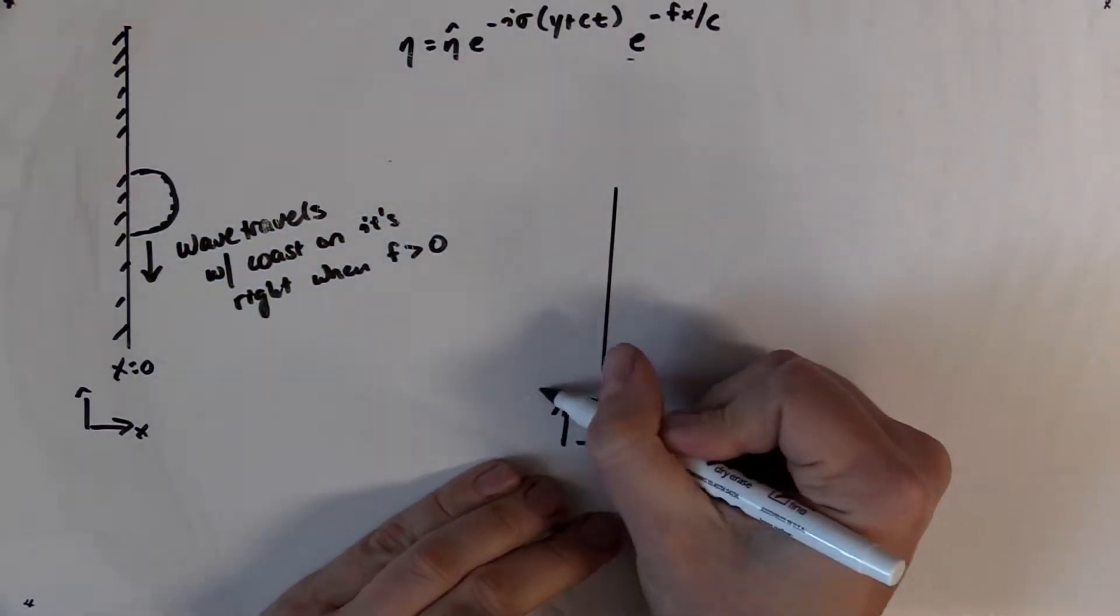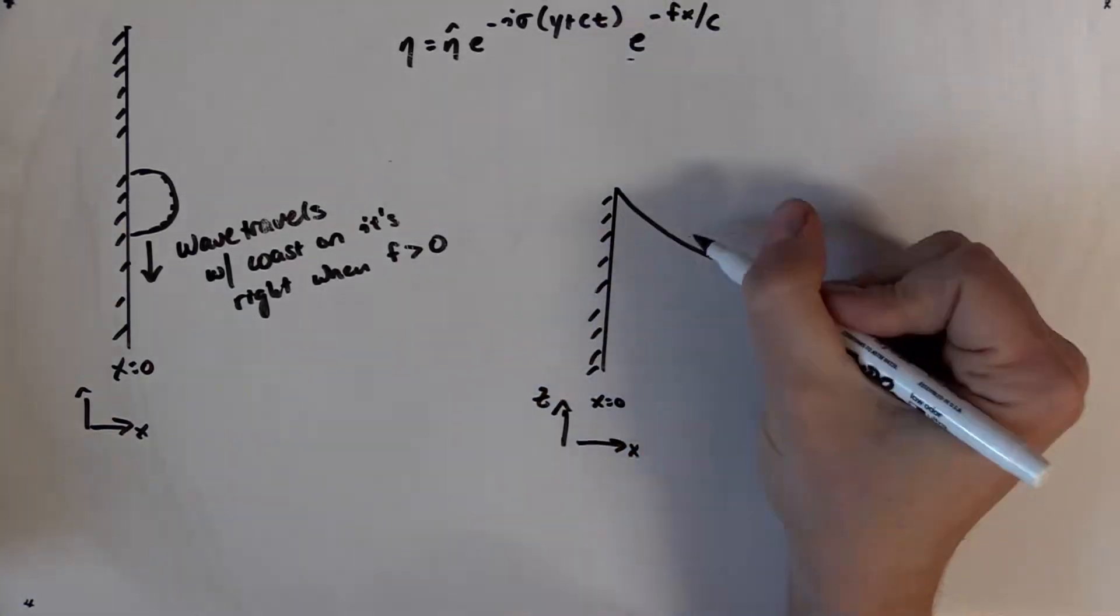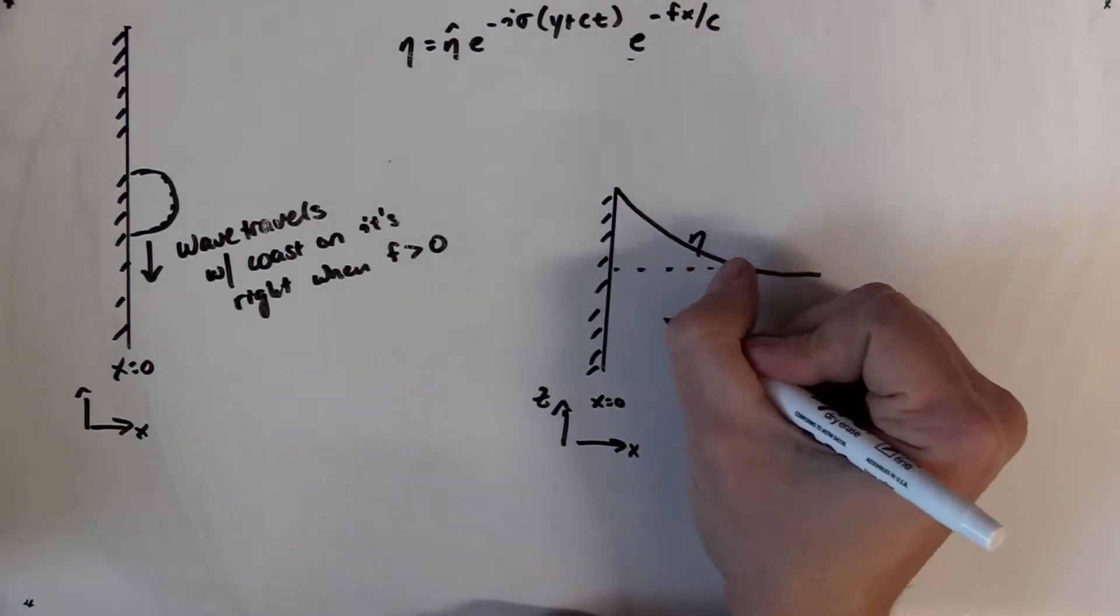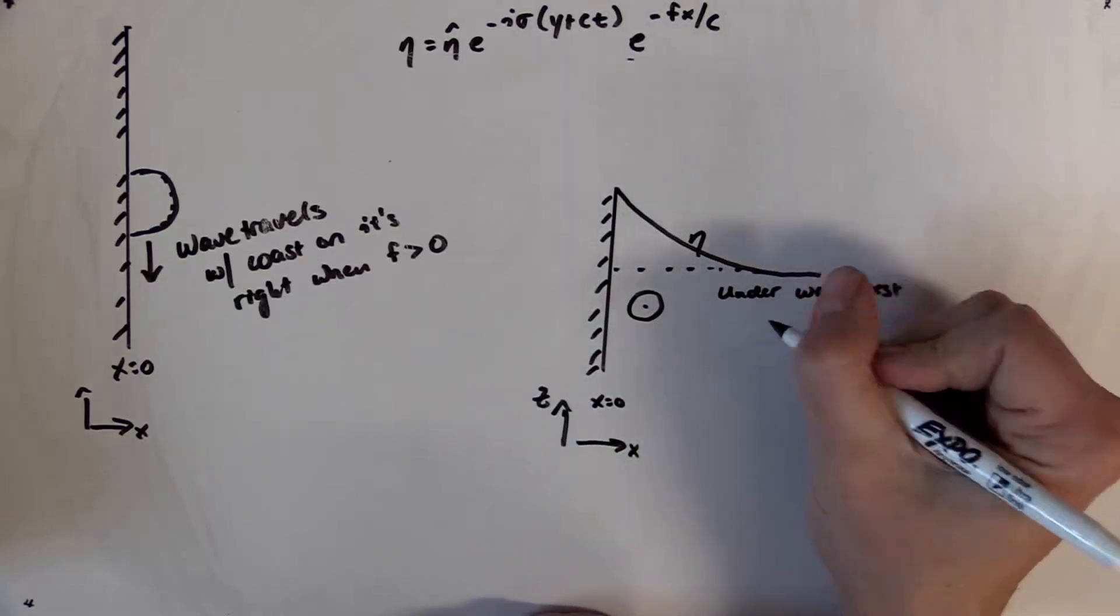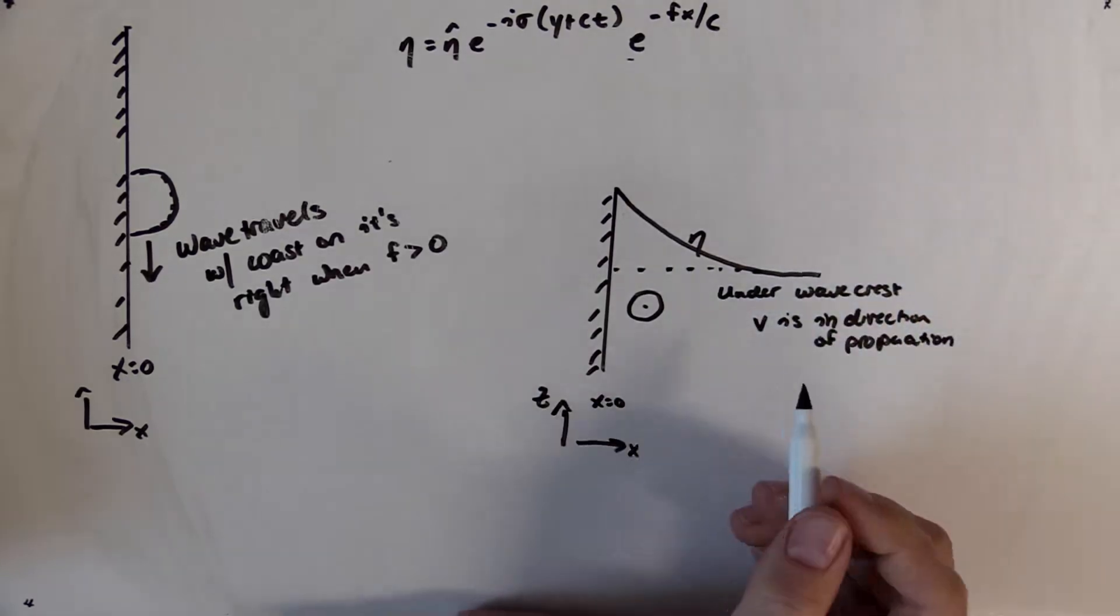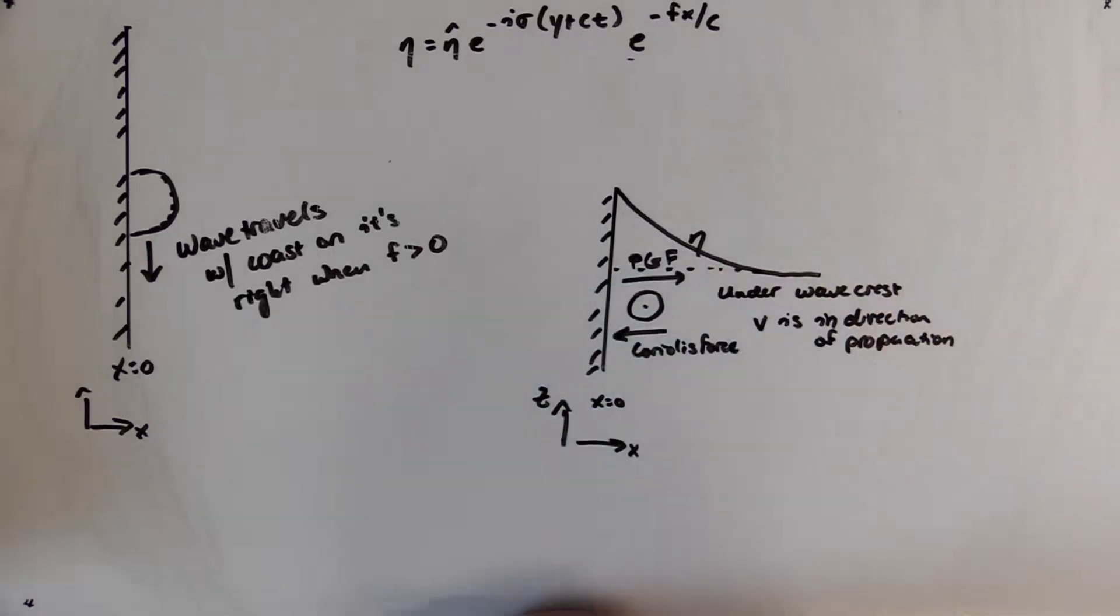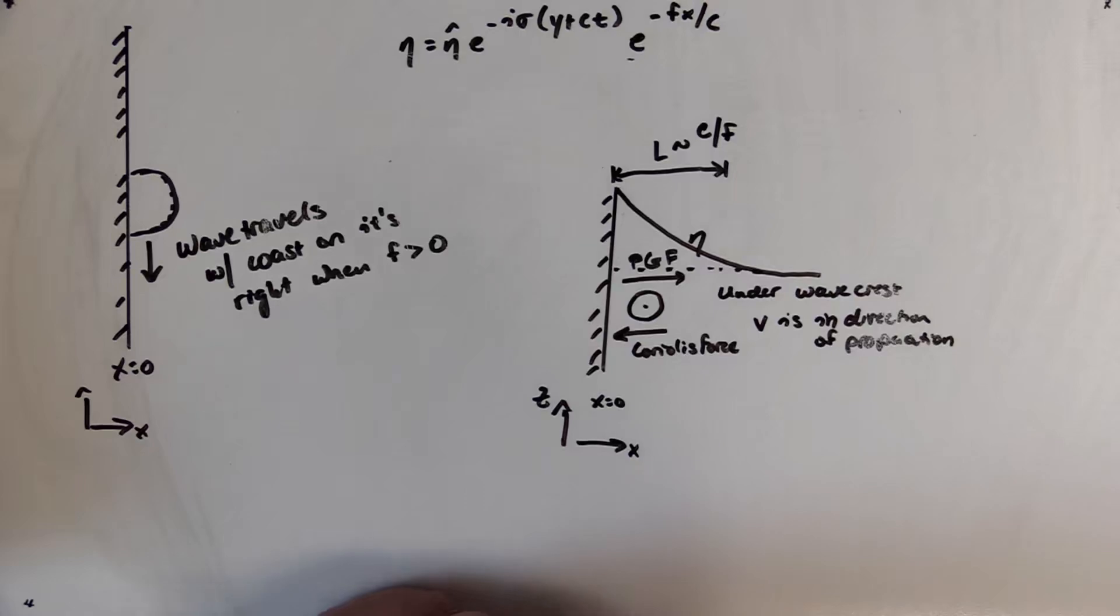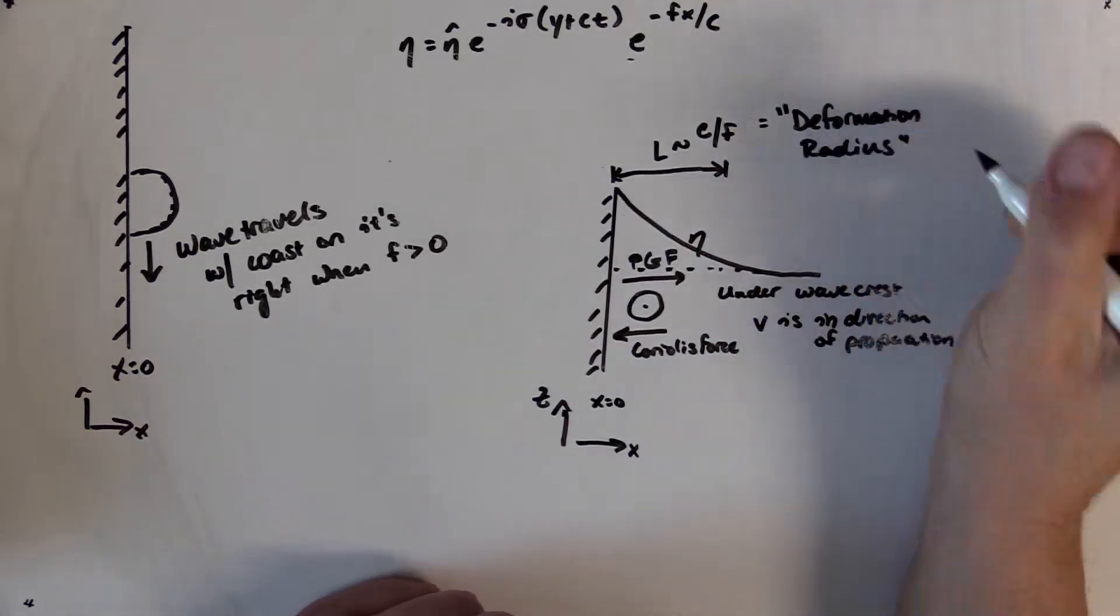If we think about the force balance that's actually going on here to explain why this is the correct solution, let's look at a vertical cross-section in the xz plane. Here we have a peak in the free surface height on the coast. Underneath the peak of a Kelvin wave, the velocity is in the same direction as the propagation. In this case, we have a pressure gradient force which is pointing in the direction offshore and the resulting Coriolis force that's associated with that velocity field points onshore completely in balance with each other. Note that the decay scale offshore is the ratio of the gravity wave speed and the Coriolis frequency. This is called the Rossby radius of deformation.